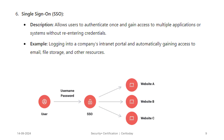Single sign-on allows users to authenticate once and gain access to multiple applications or systems without re-entering credentials. For example, logging into a company's intranet portal and automatically getting access to email, file storage, and other services. Without single sign-on, you would have to enter a different username and password for different applications and web services. Now, isn't this actually dangerous? Because if somebody gets that username and password, they can sign into all those services. Yes, that's true — that's why it is important that you use strong authentication like MFA.